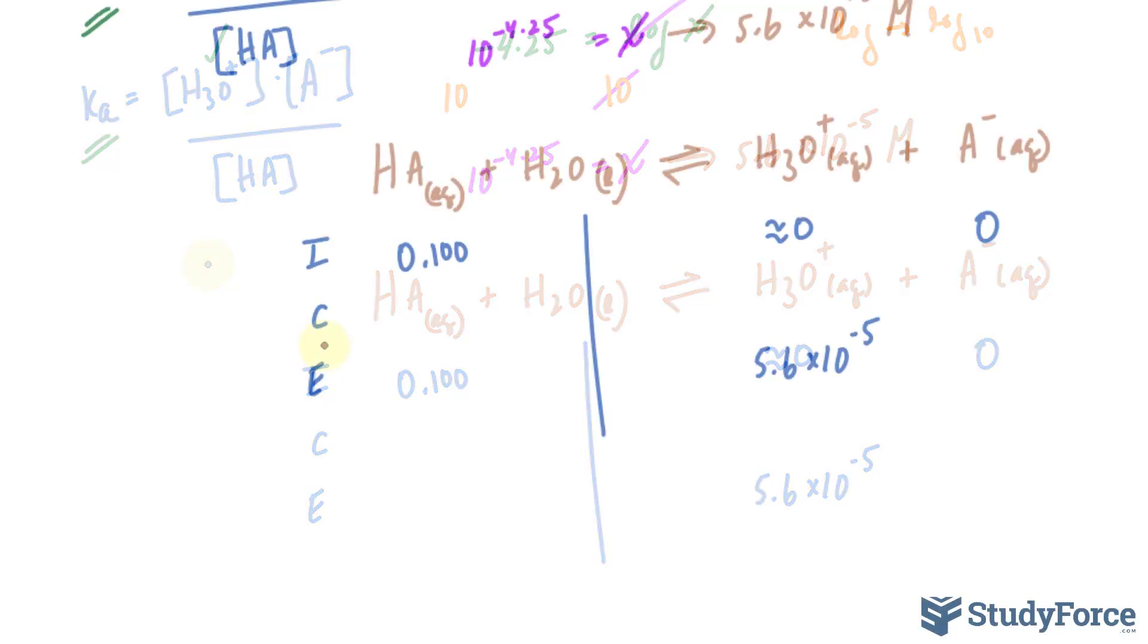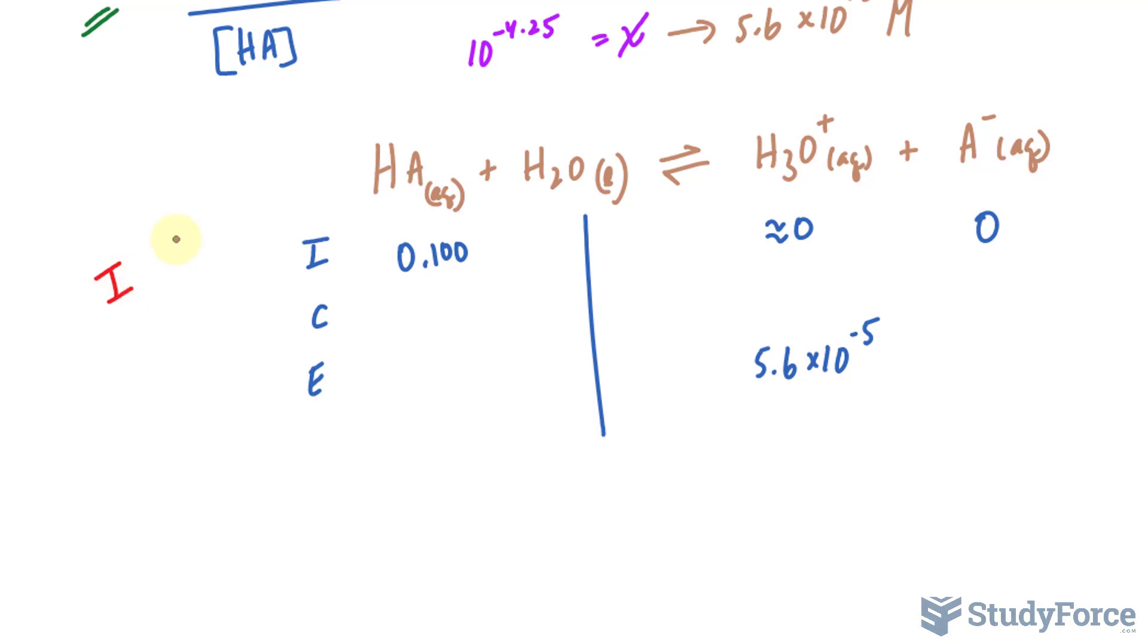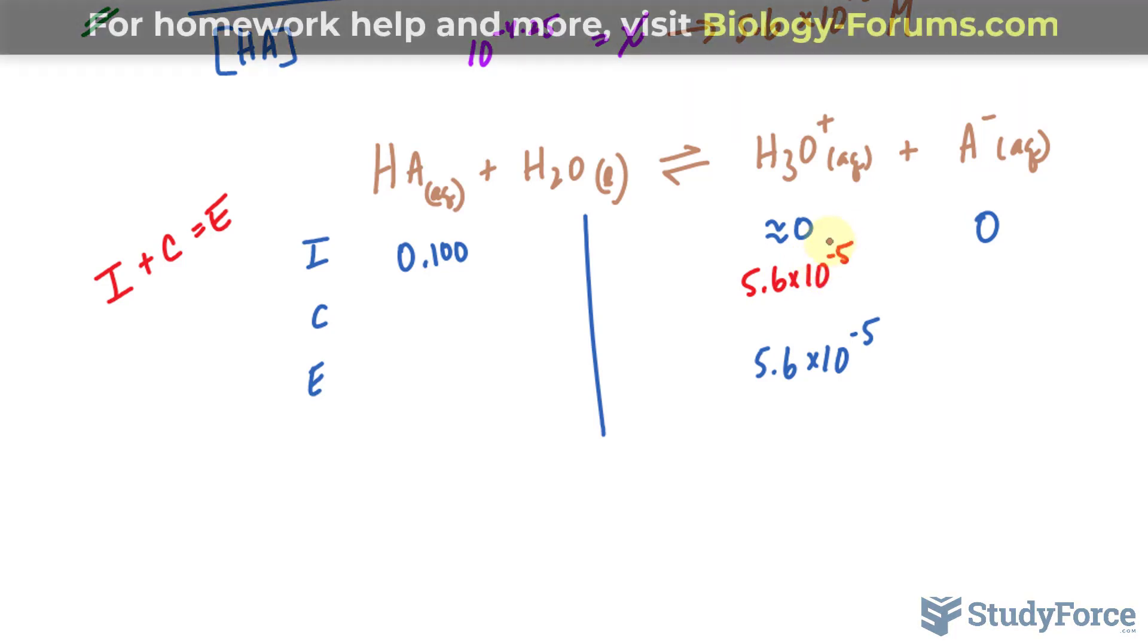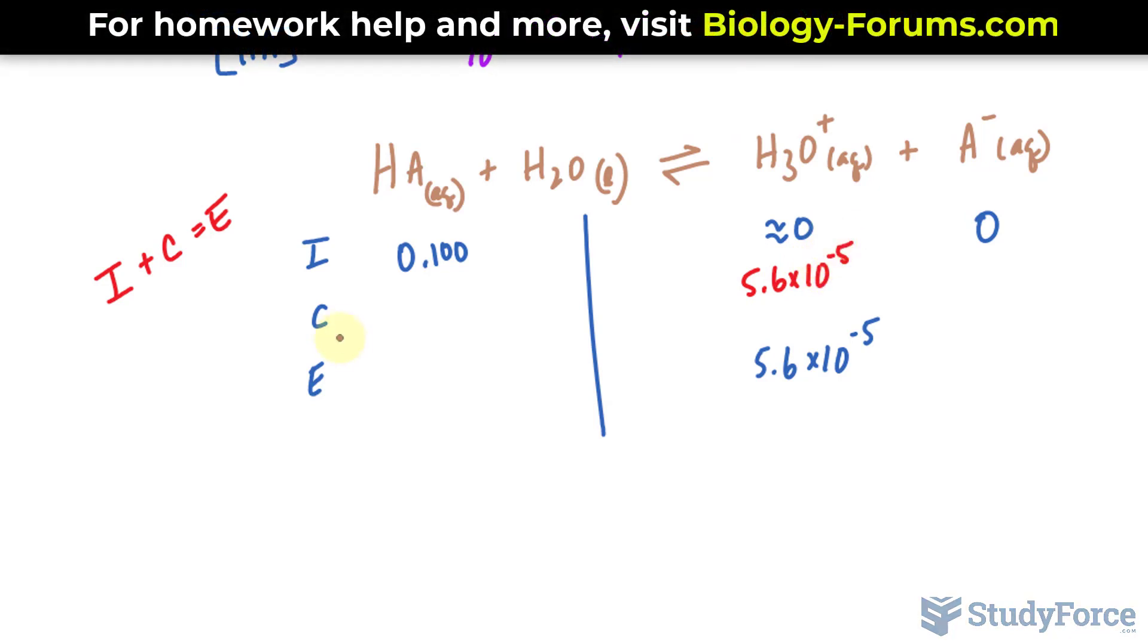The next step is to start filling in this table. Remember the relationship between I, C, and E: if you add up initial and change, you end up with E. And with that said, 0 plus 5.6 times 10 to the power of negative 5 equals the equilibrium concentration. So this should be 5.6 times 10 to the power of negative 5.